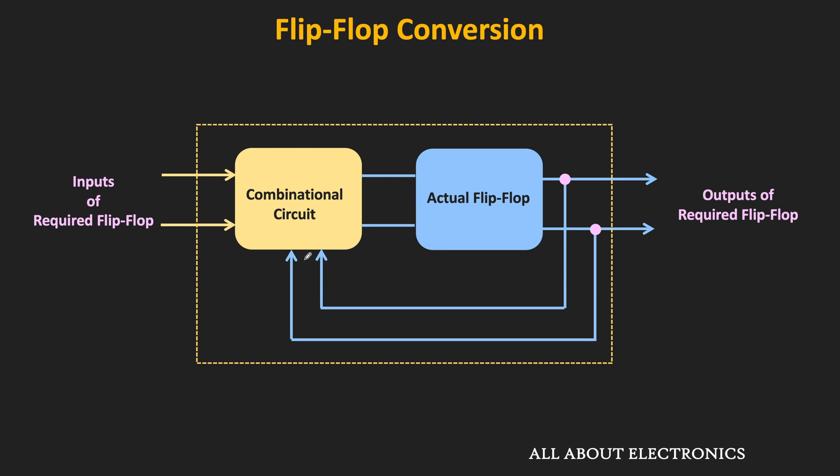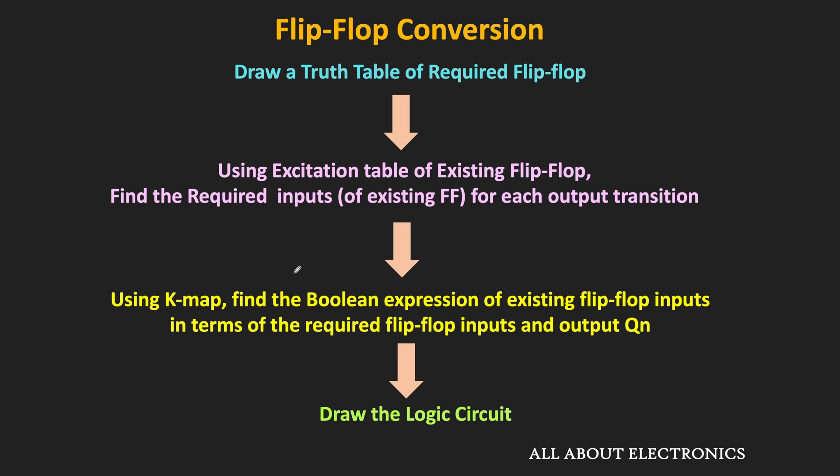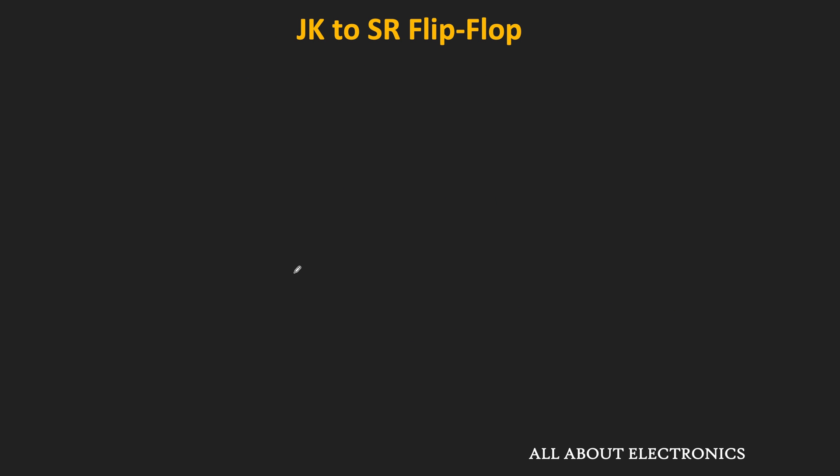In the previous video, we have already seen the block diagram of the flip-flop conversion. We saw that during flip-flop conversion, we need to design the combinational circuit so that we can use one flip-flop as another flip-flop. We also covered the different steps to follow during flip-flop conversion. Using all these steps, let us see how to convert the JK flip-flop into the SR flip-flop.